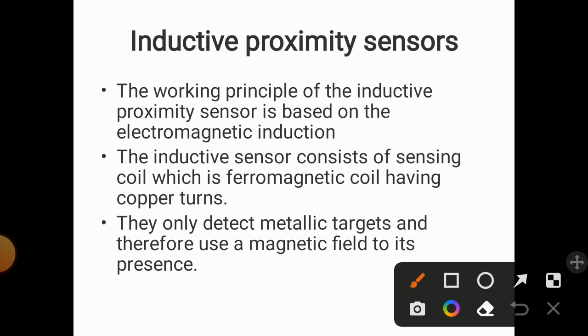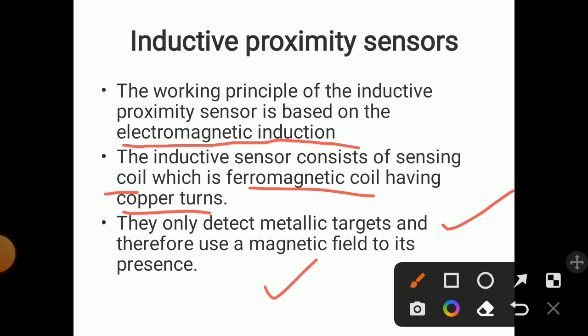The working principle of inductive sensors is based on electromagnetic induction. When an electric signal is given, the coil generates a magnetic field. The inductive sensor consists of a sensing coil, which is a ferromagnetic coil with copper turns. These sensors can detect metallic targets only — they use a magnetic field to detect their presence.